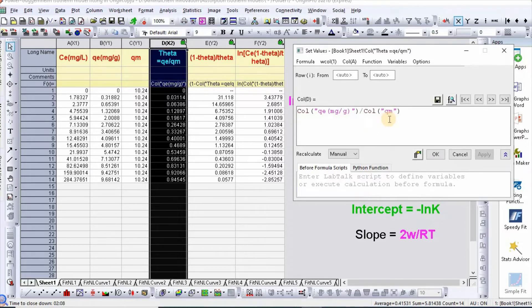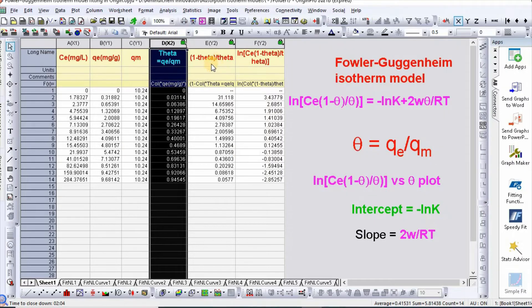Column P divided by column C. Then OK. Similarly, you need to calculate 1 minus theta divided by theta. Just right click and set column values.